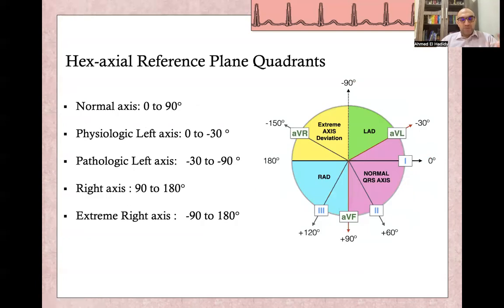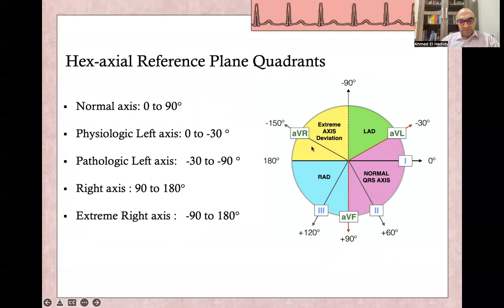What is the normal axis and what is the abnormal axis? Normal axis is between zero and positive 90. There is physiologic left axis which is from zero to minus 30, and pathological left axis from minus 30 to minus 90. Right axis is from positive 90 to positive 180, and from 180 to negative 90 is what we call extreme right axis deviation.